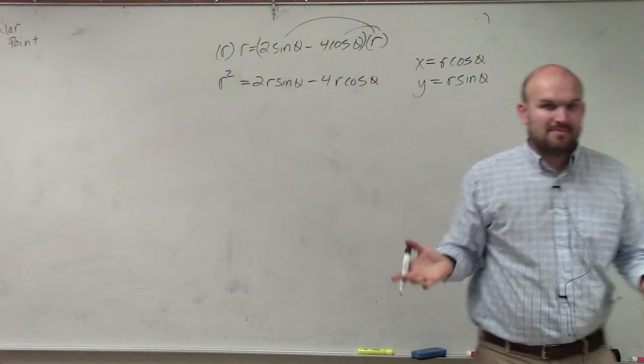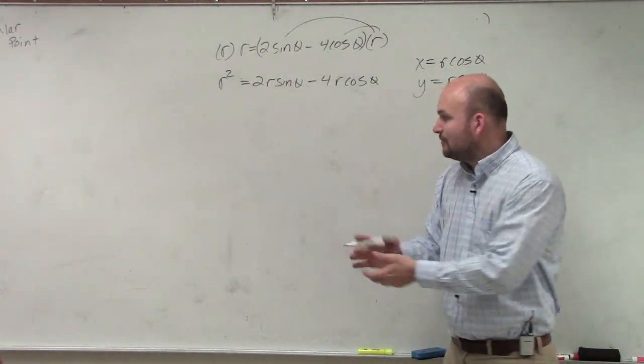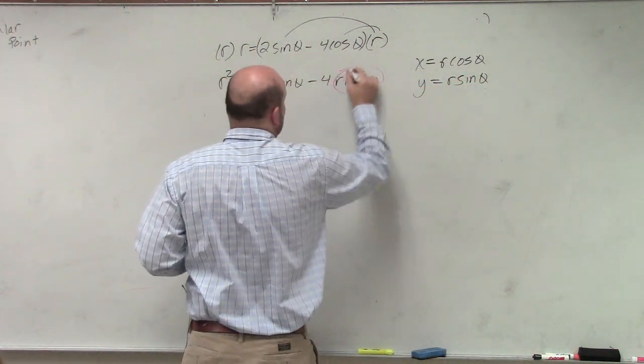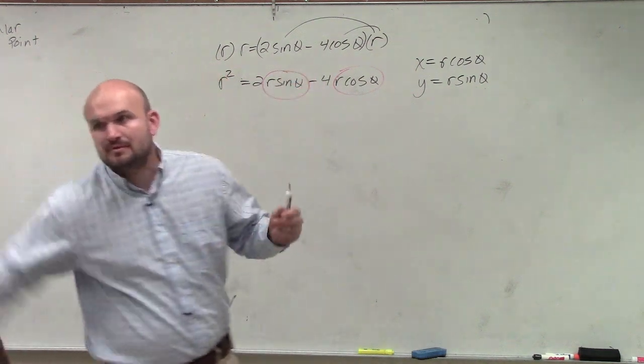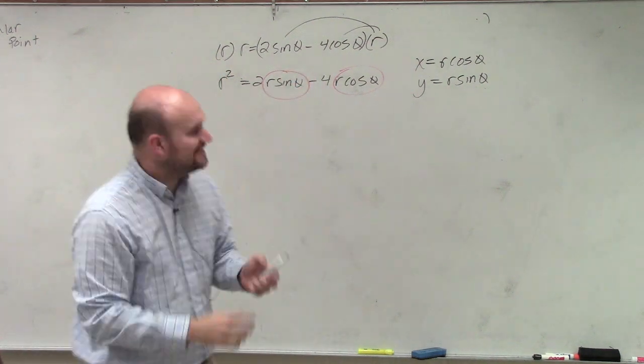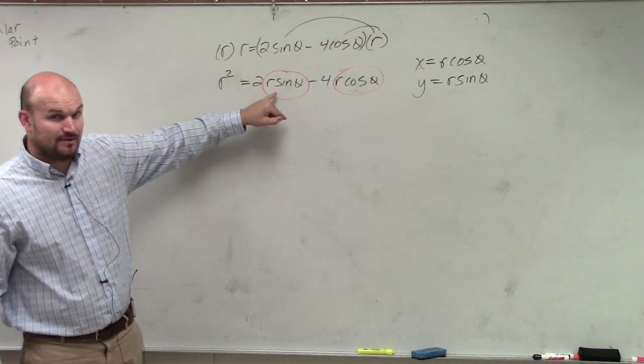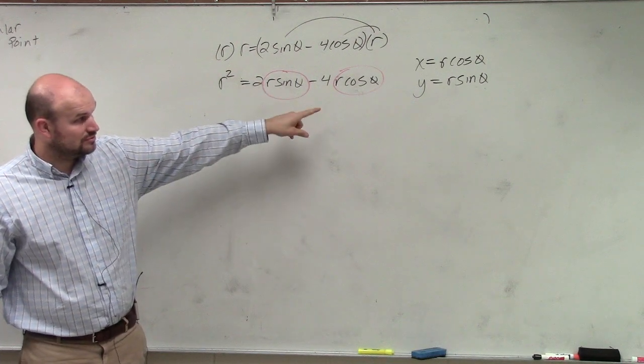Does everybody see what I mathematically did? I created now this situation where now I have a r cosine of theta, and now I have a r sine of theta. So if I have these two, now what can I replace r sine of theta with? Y.